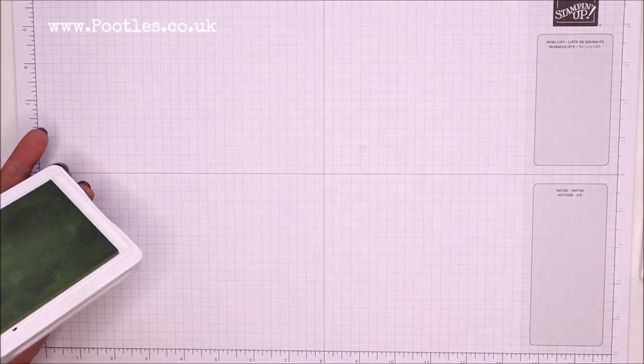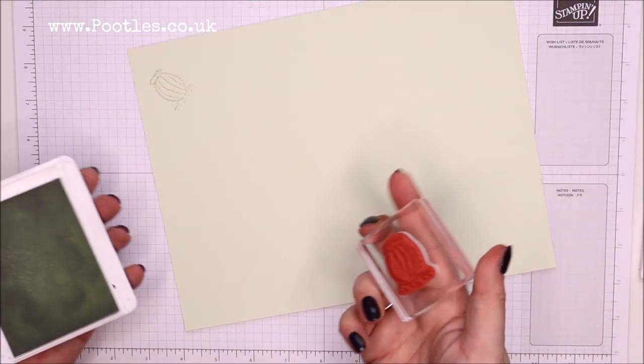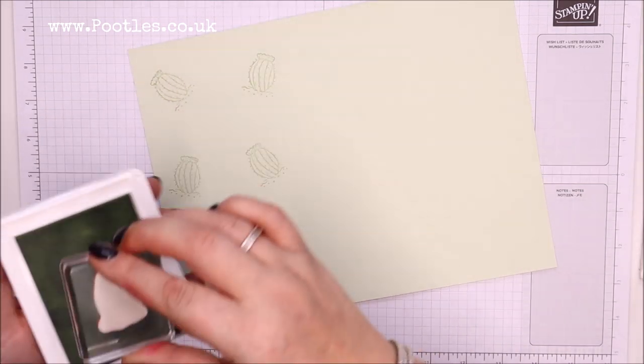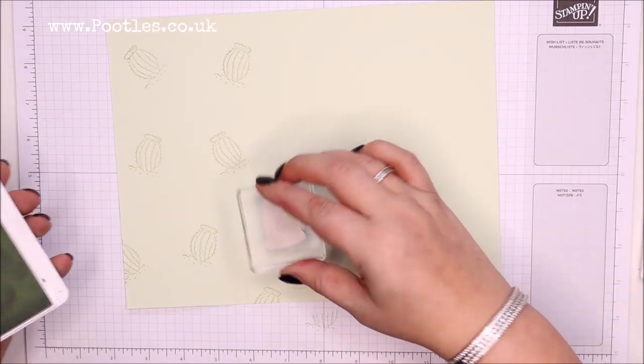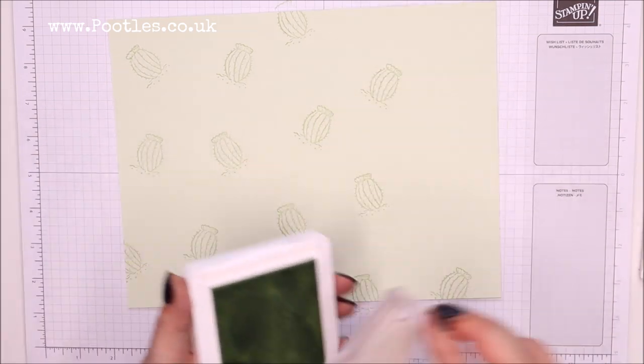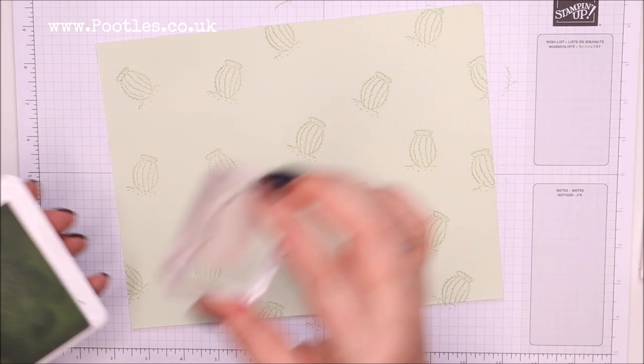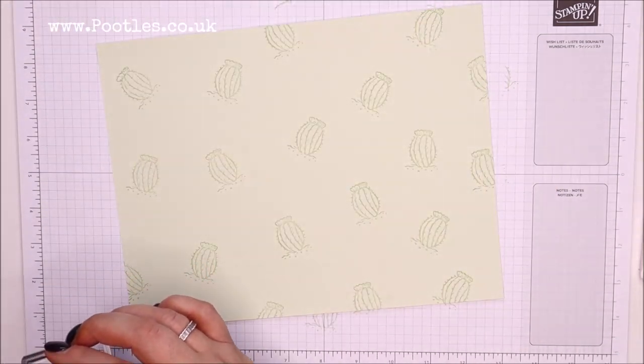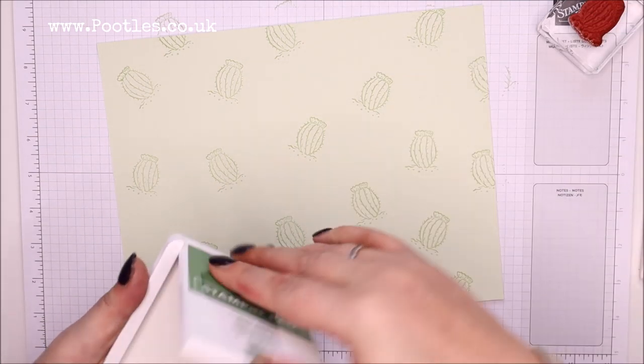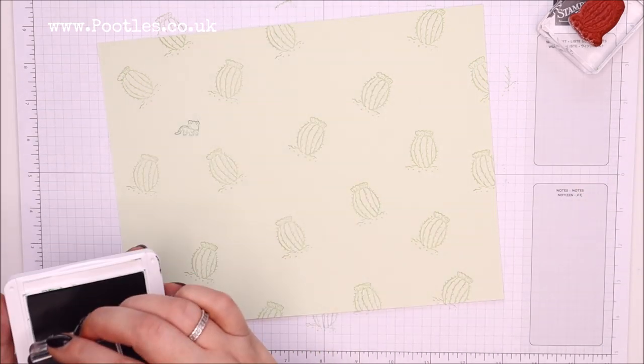Use a baby wipe to clean up and get that blob off there. So we should be good to go. So I'm just going to randomly stamp these all over the place, going off my cardstock, just anywhere that I fancy. Like that. So that's that one done.